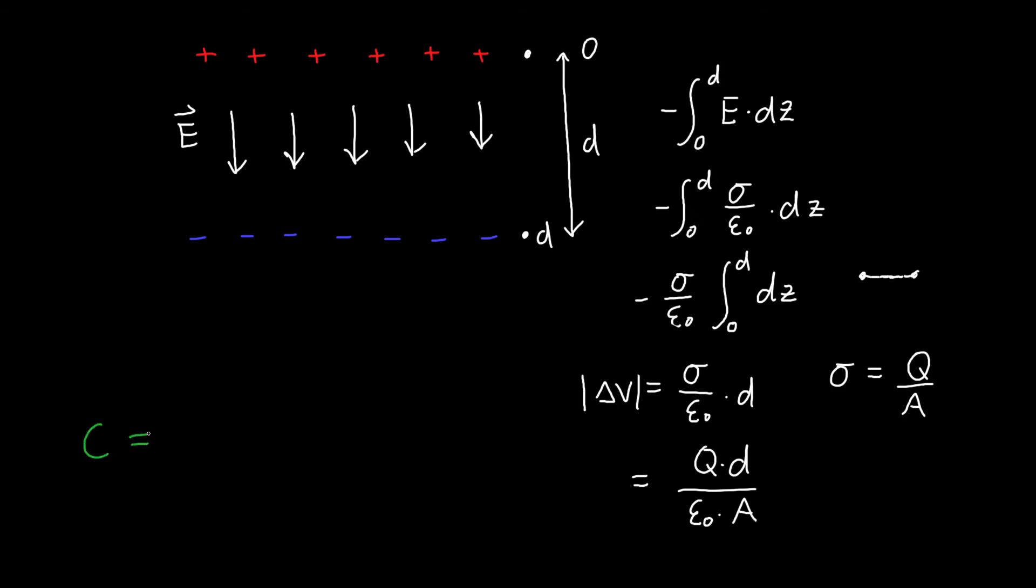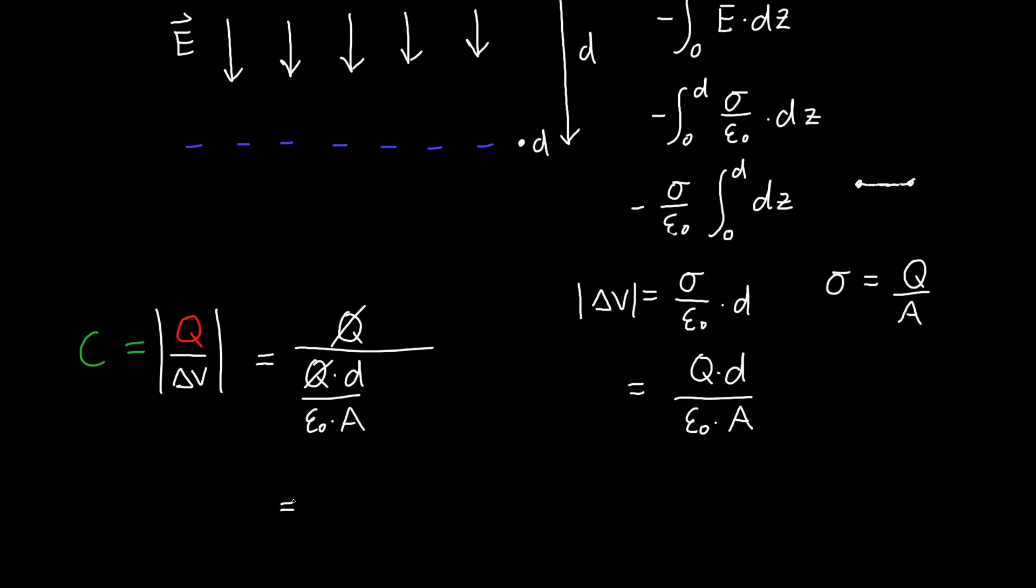And now we're finally ready to plug it into our capacitance equation, which is that the capacitance is equal to the charge q divided by the voltage delta V, taking the magnitude of all that. And recall that this is the charge on one of the plates. So if we plug in our value for delta V, so we've got q on the top, and we've got a q times d divided by epsilon naught times a, the q's cancel, which is wonderful. That's what we want, because the capacitance shouldn't depend on the amount of charge that we put on. And we're left with epsilon naught times a divided by d. And this may be one of the most famous formulas in electrical engineering and physics, and it's certainly one of the most useful. This is the capacitance for a parallel plate capacitor of area a and separation d.